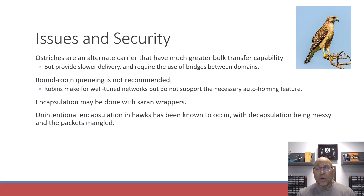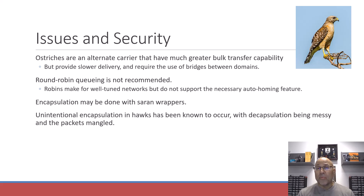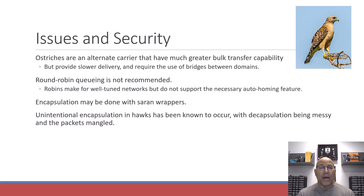There were some alternatives. Ostriches are an alternative carrier — they have a much greater bulk capability, think the Amazon of the day. But of course they were slower delivery and had to use bridges in between your domains.